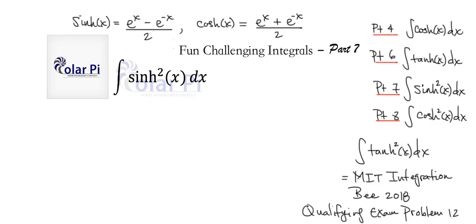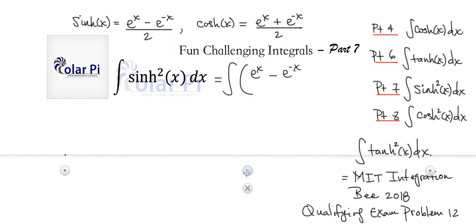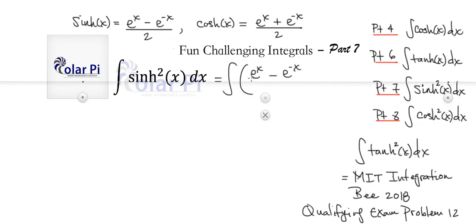Hey guys, part seven here, and we're going to do the integral of sinh squared. Since we're given sinh here, we know that we can rewrite our integral — we can write e to the x minus e to the negative x divided by two, which is sinh, and then square it, and then of course dx.